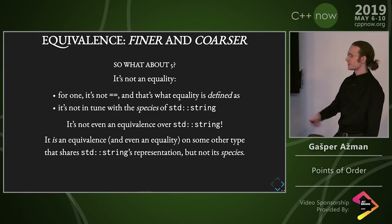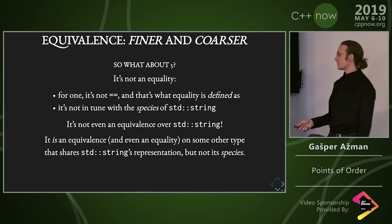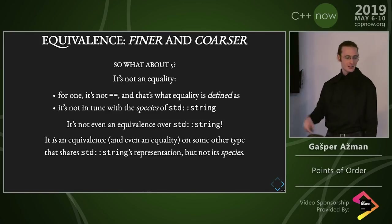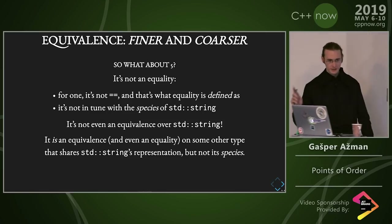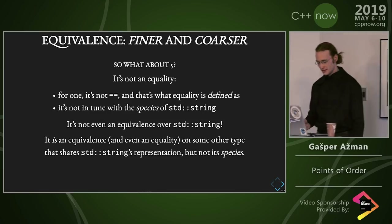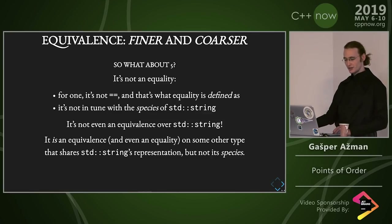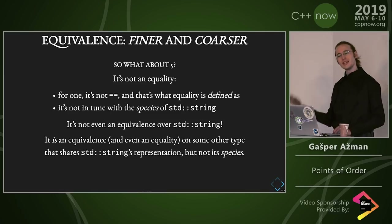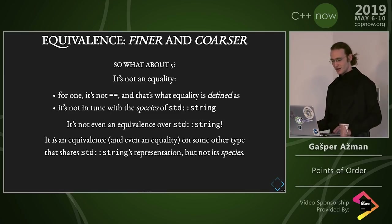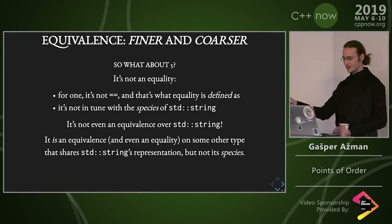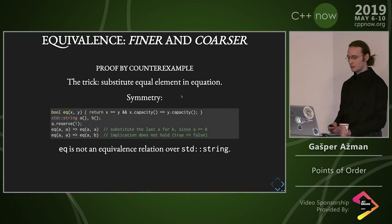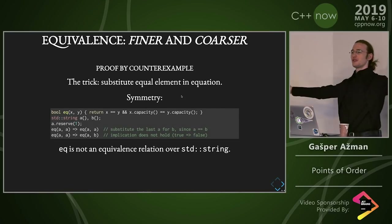And this last one — it should have said equivalence. It's not an equivalence — I have proof. I'm going to need to read the proof. So it is not equals, and that's what equality is defined as. And it's not in tune with the species of std::string. It's not even an equivalence over std::string — and that's the fun part. Proof by counterexample. First proof we do.